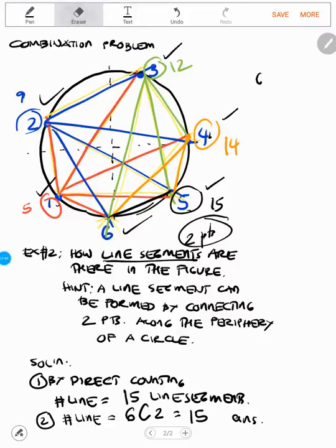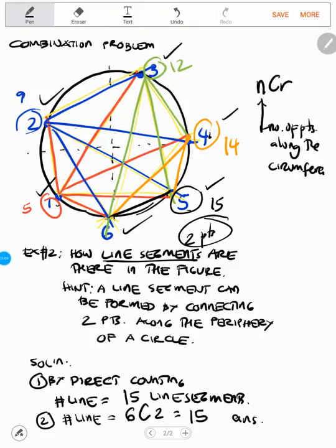The pattern is NCR, where N refers to the number of points along the circumference. R equals two if that is a line, three if that is a triangle, four if that is a quadrilateral, five if that is a pentagon, six if that is a hexagon.